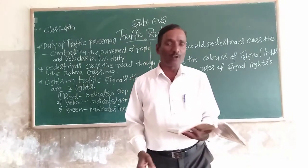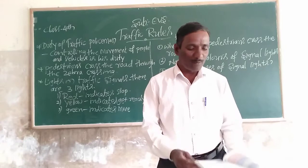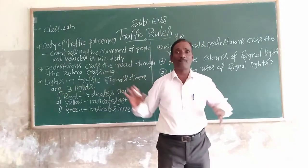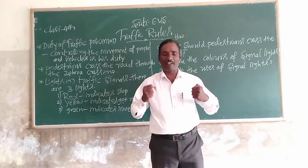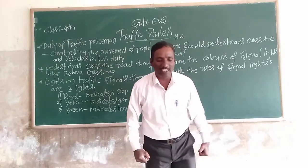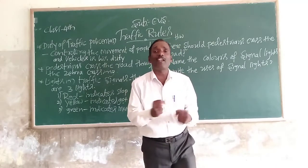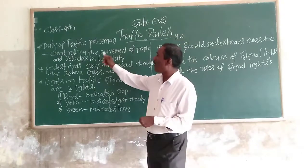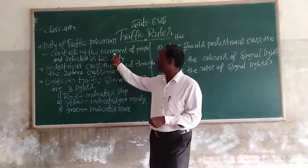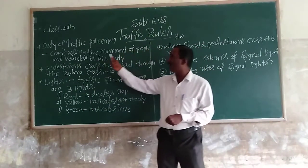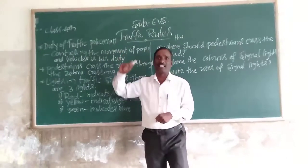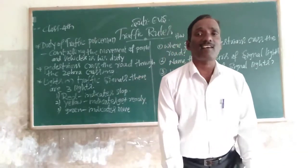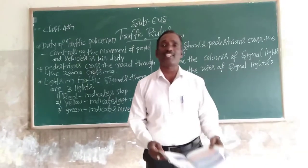A traffic policeman is controlling the movement of vehicles. The traffic policeman is controlling the movement of people and vehicles on the road.